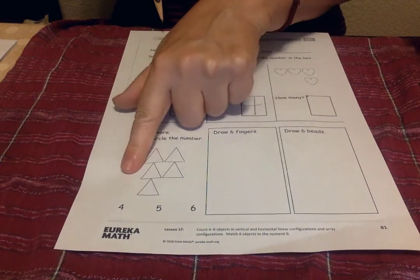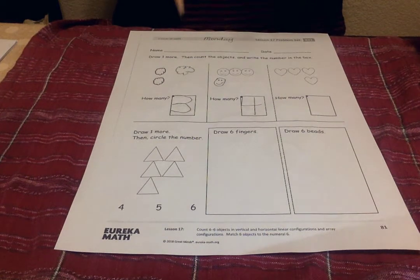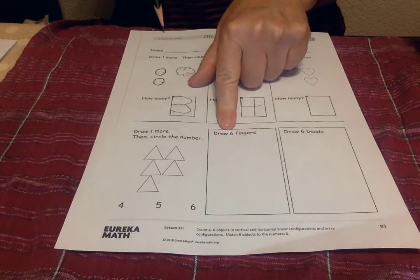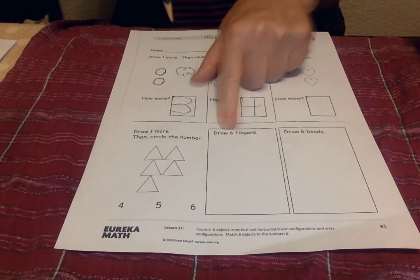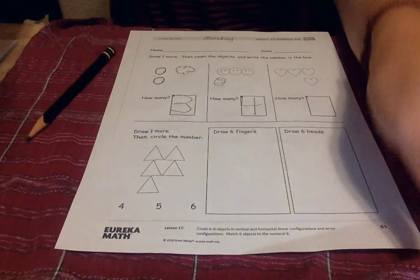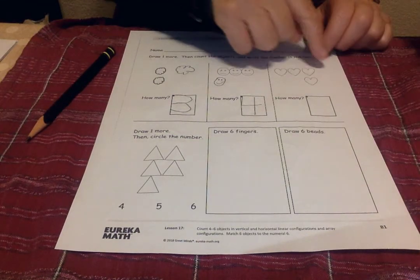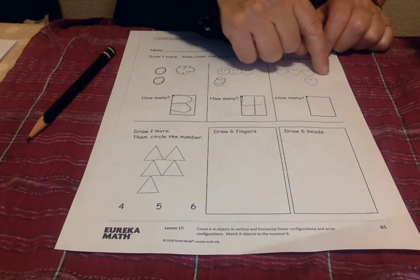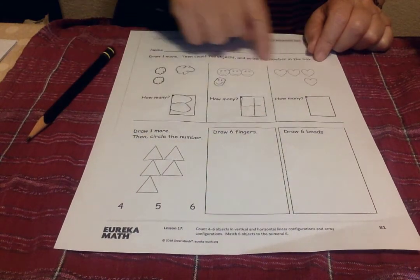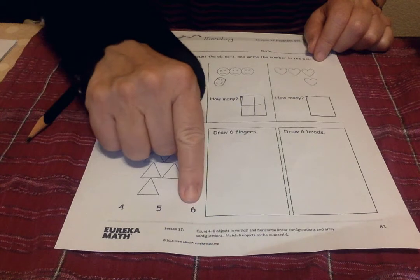So each time you draw one more. And then this says draw six fingers. Ooh. Six fingers. Draw six beads. Around, I always forget how we say it. Around the hoop and make a loop. That's a six. Around the hoop and make a loop. There it is. It's very curly.